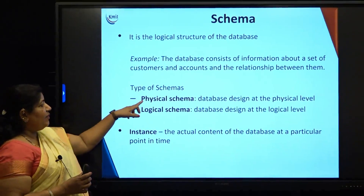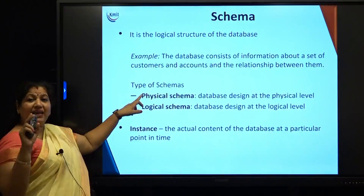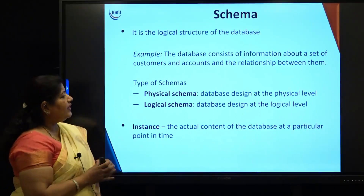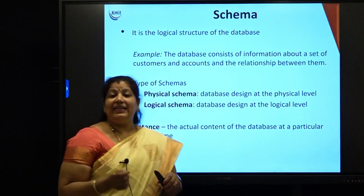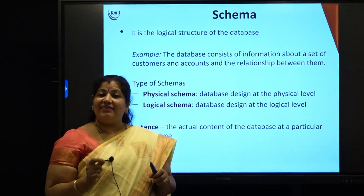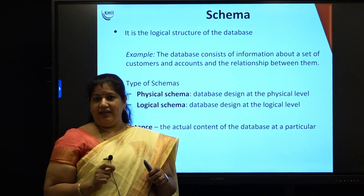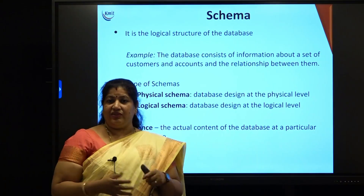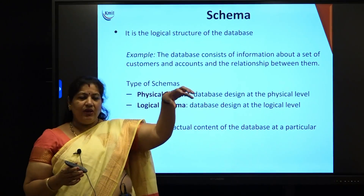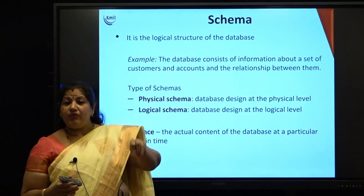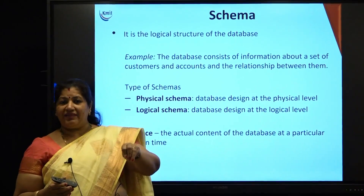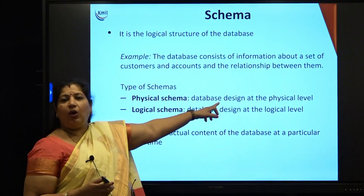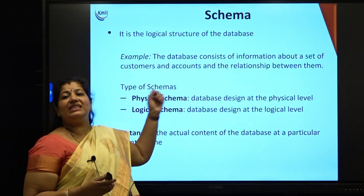A schema can be of two types: a physical schema and a logical schema. The database design at the physical level talks about its storage structures — how and where you are going to store data, how you are going to access it, whether through random access or index sequential access. This is what talks about the physical schema.